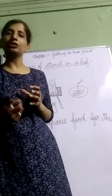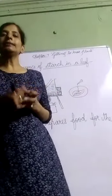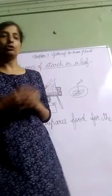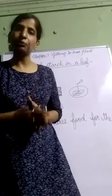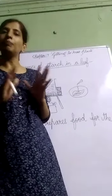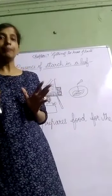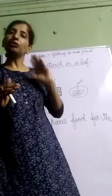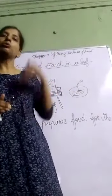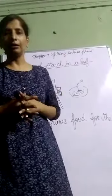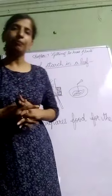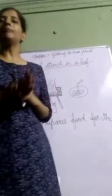This transpiration pull forces water to come up in the plant. So water which is absorbed by the roots is transported by the stem to all parts of the plant. Due to transpiration pull, water reaches from the ground to all parts of the plant. In this way, transpiration plays a very important role in the plant.